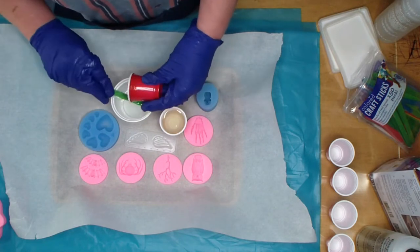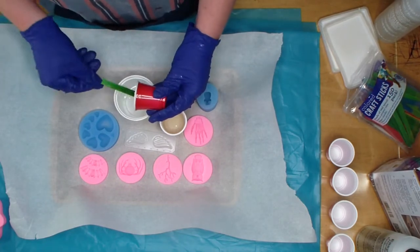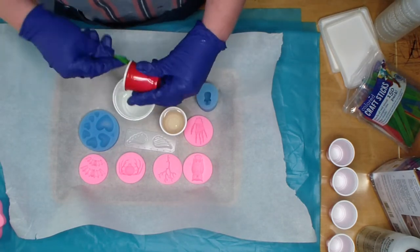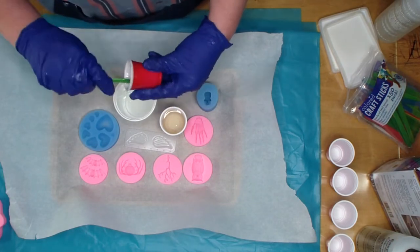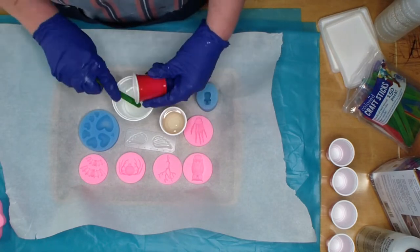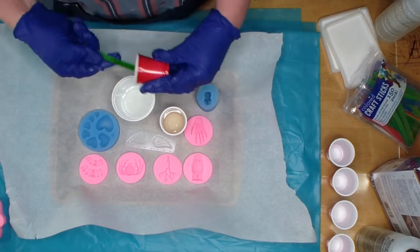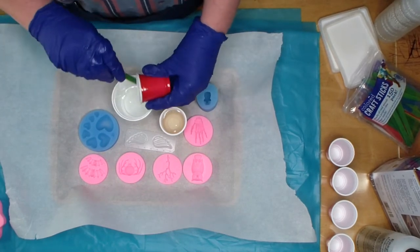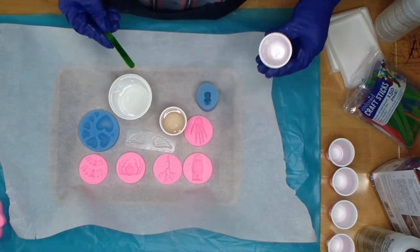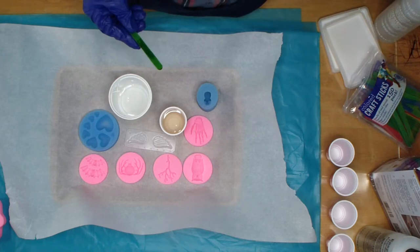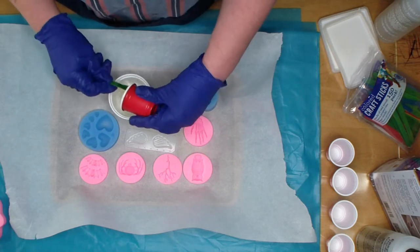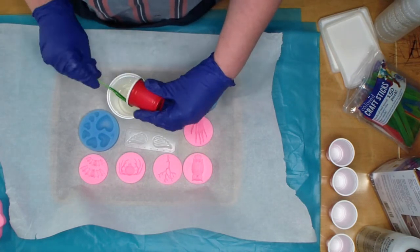It's real important to scrape your sides and get all of part A and all of part B, at least every drop that you can possibly get out of there. It works better that way. I've seen a lot of people where parts of their mold are harder than others and it's because it's not mixed right. You've really got to mix this stuff. That's part A and now I'm going to add part B. You have about 40 minutes to work with this.